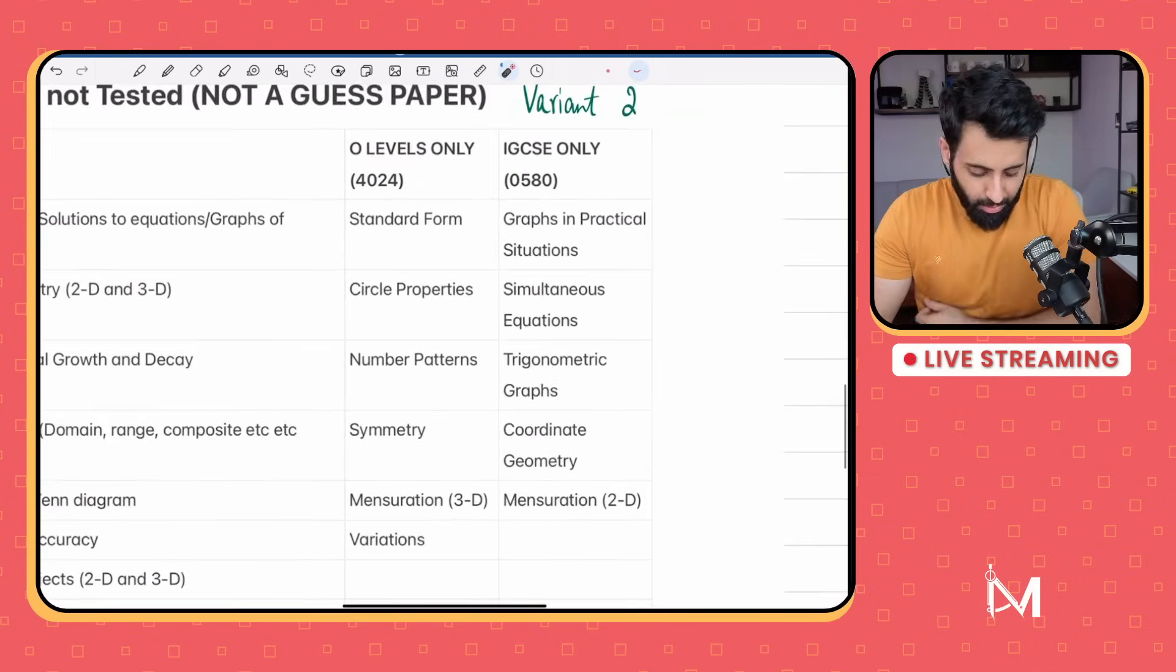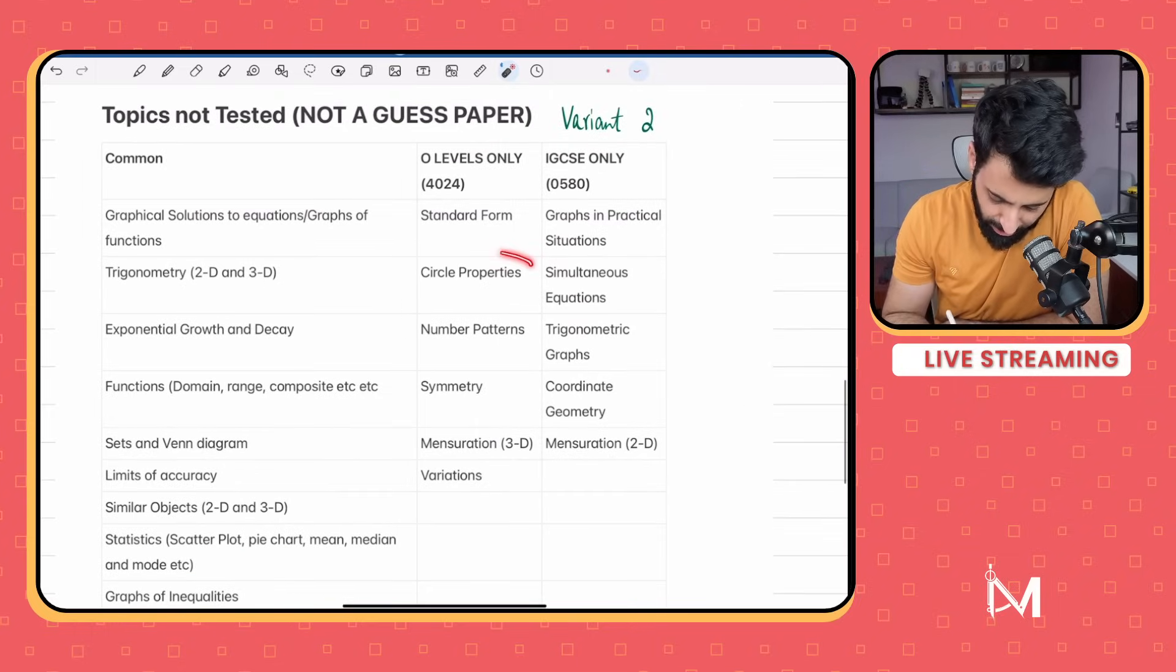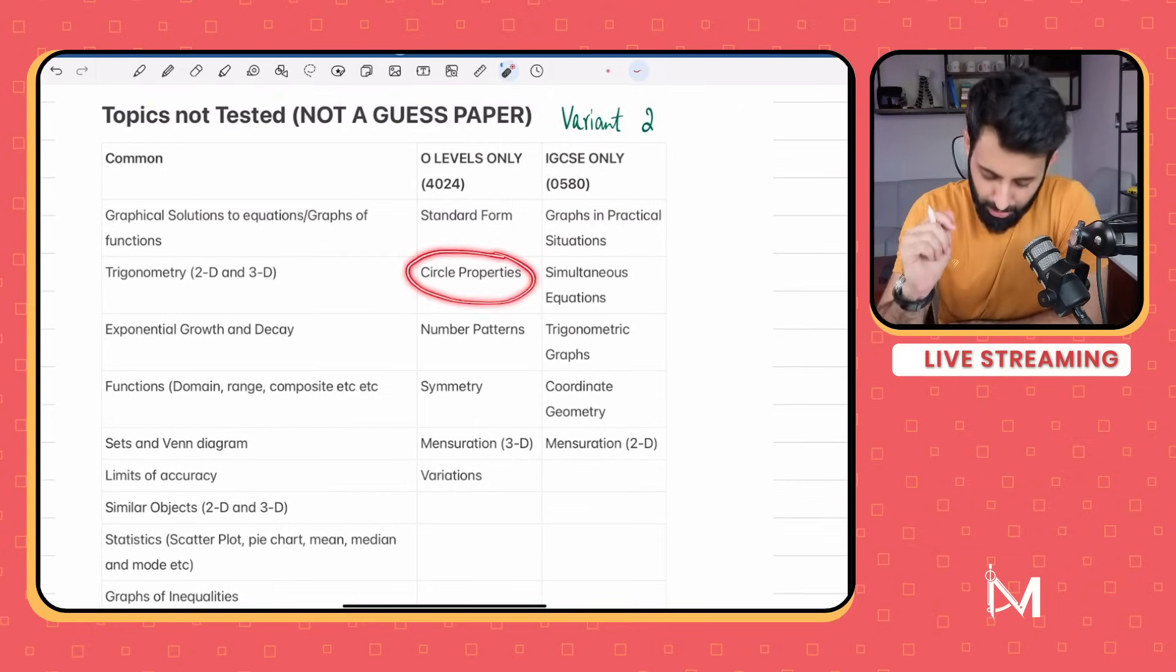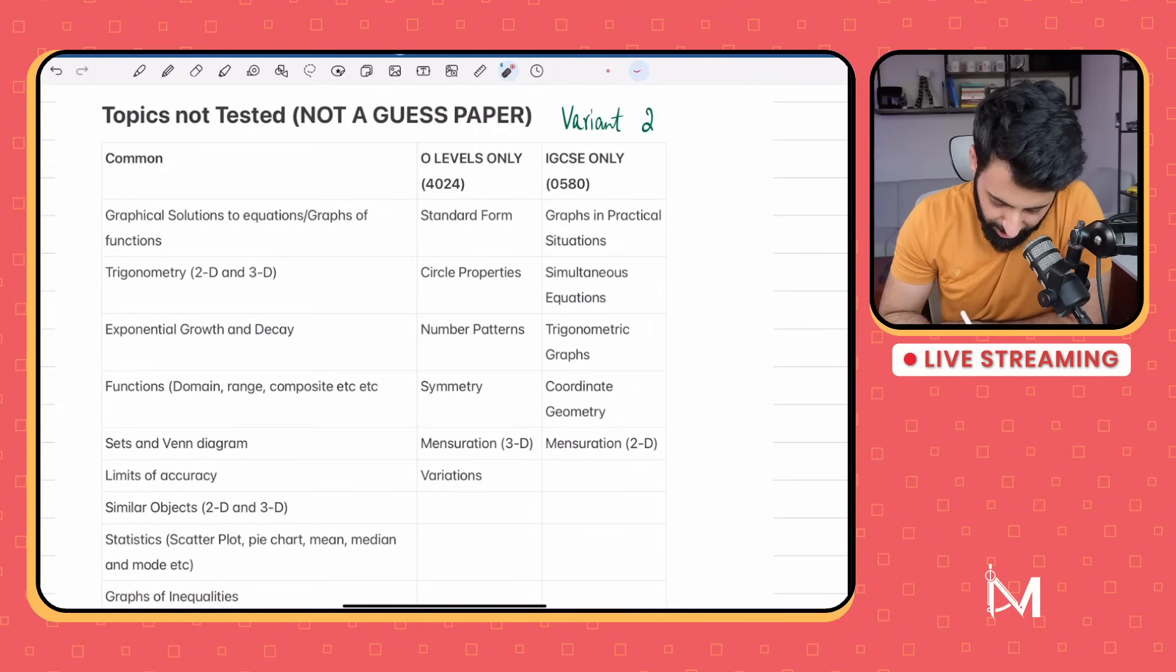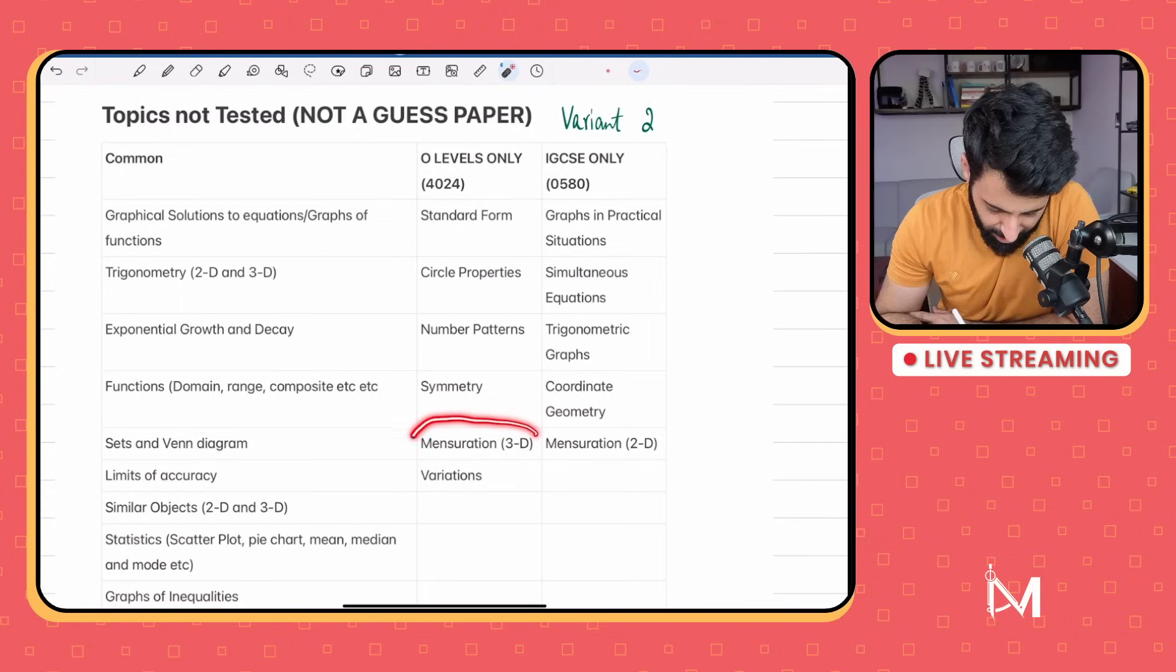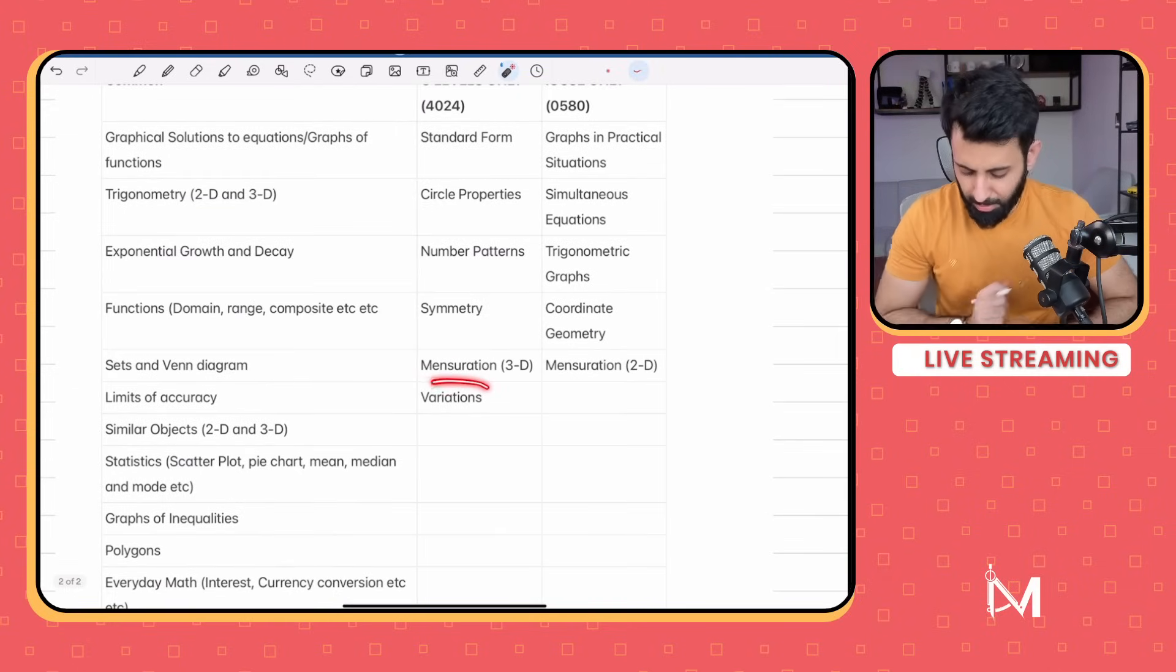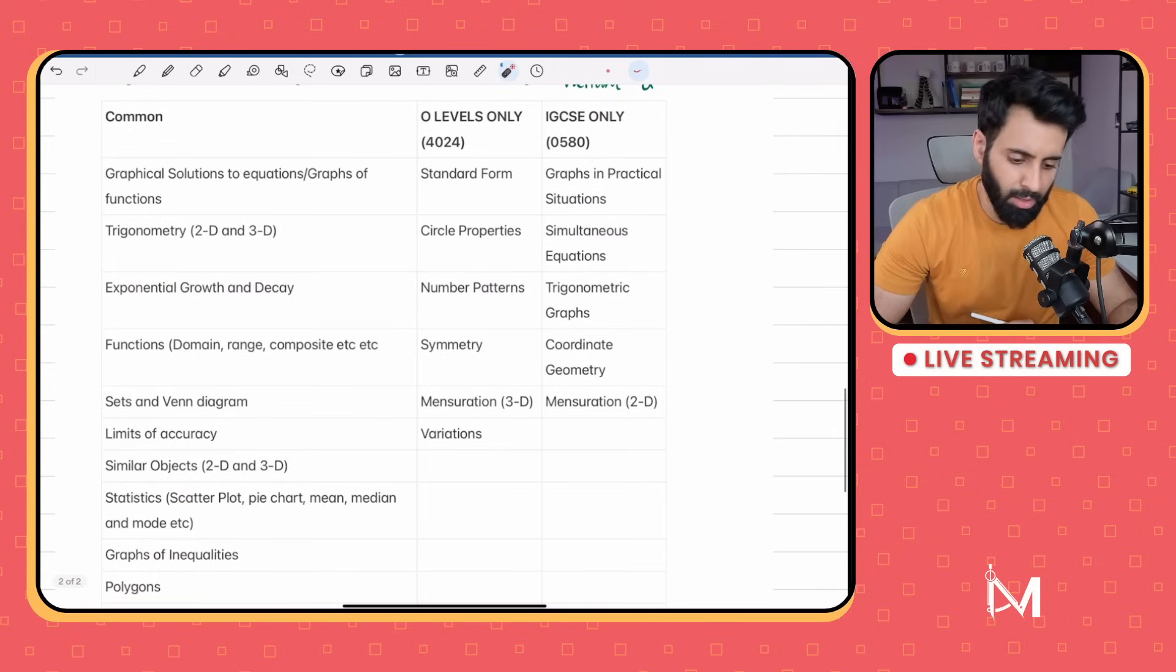Now let's come to O-levels only. When it comes to O-levels, standard form hasn't been tested. I think standard form was tested in IGCSE but not in O-levels. Circle properties - I do believe there was a question on angle properties but not on circle properties, so you can expect that in paper two. Number patterns, once again hasn't been tested. Symmetry - this could be rotational symmetry, this could be reflection symmetry, you can expect either of the two in the coming paper. There was a question of mensuration, but it was 2D mensuration, so you can expect 3D mensuration to be tested in paper two of O-levels. Then variations - this is when the question says that so and so is directly proportional to something.